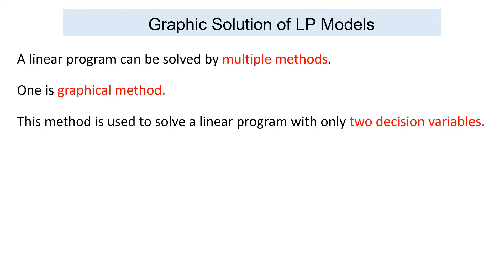A linear programming problem can be solved by multiple methods. One method is the graphical method. The graphical method is used to solve a linear program when the decision variables are only two. If there are more than two decision variables, we can use another method like the simplex method. Keep in mind that in order to find the solution using the graphical method, the decision variables should be only two.